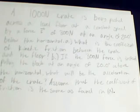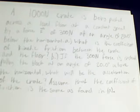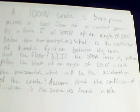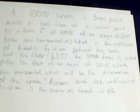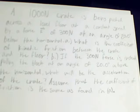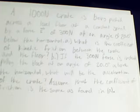Hello. Me and my partner are working on this problem from chapter 4 that we thought we'd like to share with you. A thousand newton crate is being pushed across the level floor at a constant speed by the applied force of 300 newtons at an angle of 20 degrees below the horizontal. Part A asks: what is the coefficient of kinetic friction between the crate and the floor?